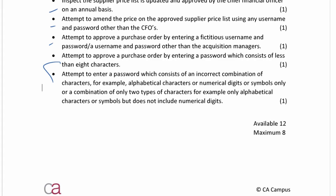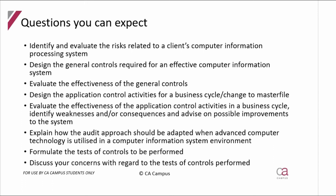This was a good question covering both manual and computerized controls and the testing of both. In terms of exam questions, you can expect to: identify and evaluate risks related to a computer information system; design general controls or identify weaknesses; know controls needed for system development and continuity of operations; design application controls for a business cycle or evaluate weaknesses; explain how to adapt the audit approach when computers are involved; and formulate tests of controls based on the question scenario.